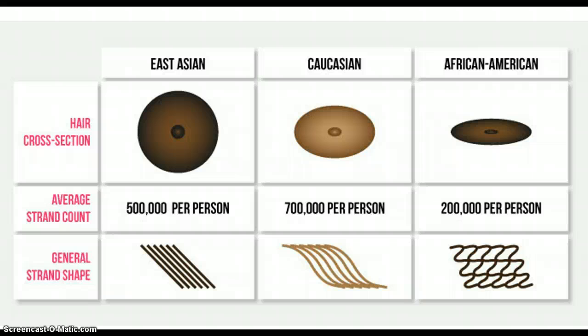Starting with the mongoloid, which is the East Asian one, the first one you see there. The medulla is usually unbroken. You can see it's very dark and it'll run the length of the hair. So they have very thick medullas. They also have the thickest cuticle and thickest overall diameter. So overall, their piece of hair is going to be a lot thicker than, say, an African American. They also have a very round cross-section. And as you can see, they have the straighter general shape.